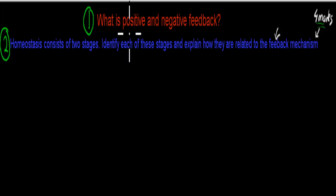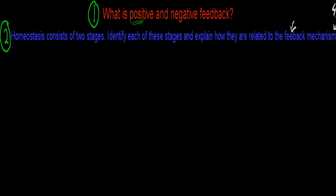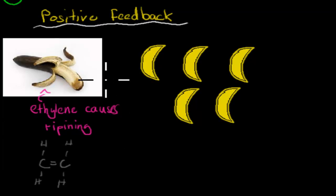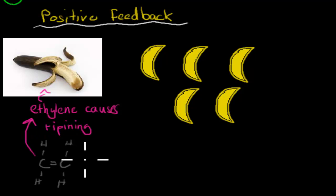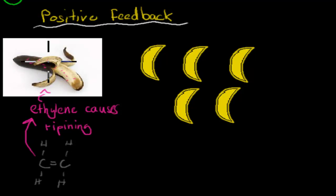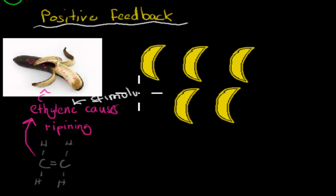I'll start with positive feedback. This is a banana, and bananas ripen by themselves. What actually causes them to ripen? Something called ethylene. Ethylene is what causes them to ripen. You don't need to remember this, but I use this example to show you what positive feedback is. If there's a bit of ethylene — these purple dots are meant to represent ethylene molecules — which can be produced by the banana itself, that causes the banana to ripen. Ethylene itself is the stimulus, because it is what causes a change.